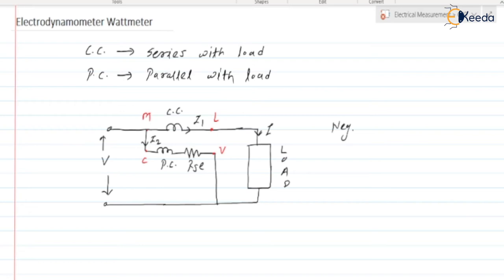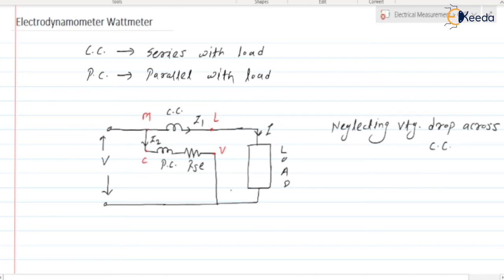Neglecting the voltage drop across the current coil, and as we know, the deflecting torque Td is equal to I1 · I2 · cos φ · dM/dθ.